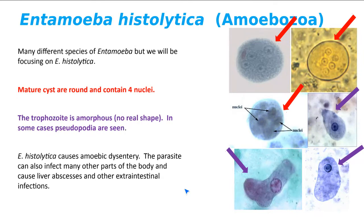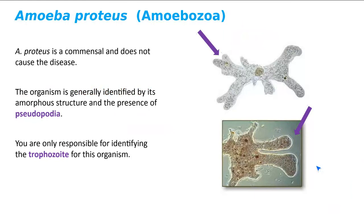The next one is Amoeba proteus. I'm showing this mostly because it allows me to test your ability to identify pseudopods — the pseudopoda. The pseudopoda are pointed to by the purple arrows. There are going to be lots of pseudopoda. It's a commensal — it doesn't cause disease — but it shows the structures very well. One student in 1406 just wanted to watch the amoeba for the entire hour because they found it so fascinating, especially because it was feeding.